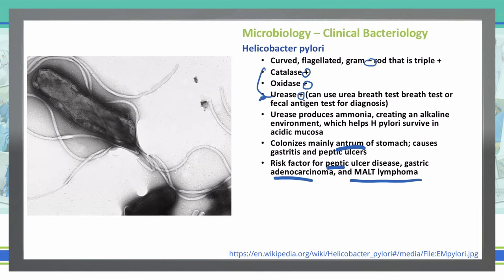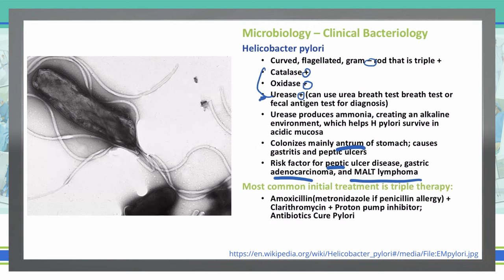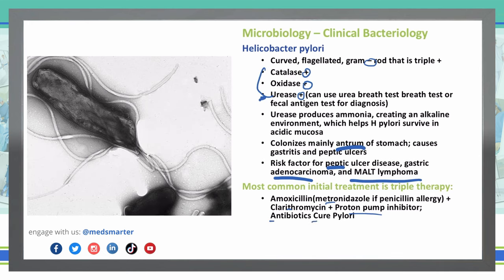There are two different types of treatments. The first initial treatment is known as triple therapy, using three different medications. First and foremost we're going to use amoxicillin — if the patient has a penicillin allergy we can switch to metronidazole. Then we add clarithromycin and a proton pump inhibitor. You can think of the triple therapy as 'antibiotics cure pylori' — ACP: Amoxicillin, Clarithromycin, Proton pump inhibitor.